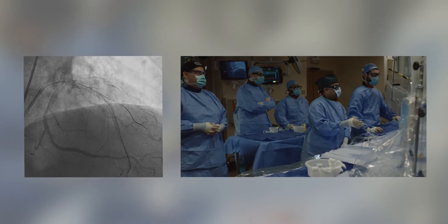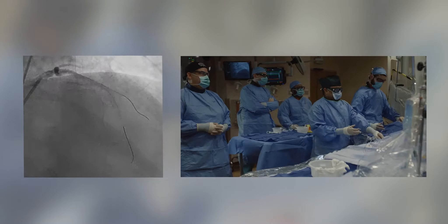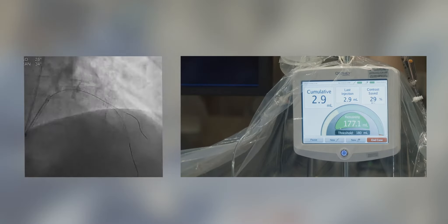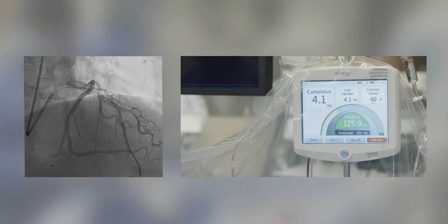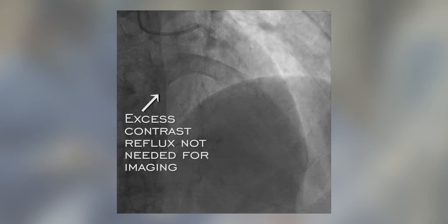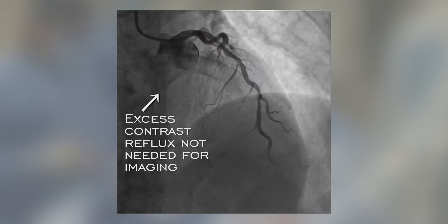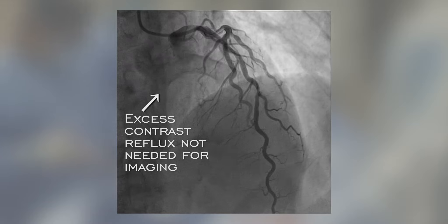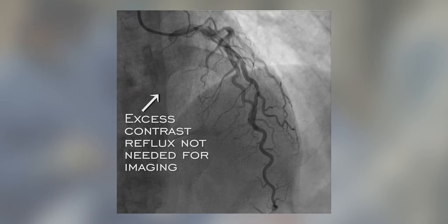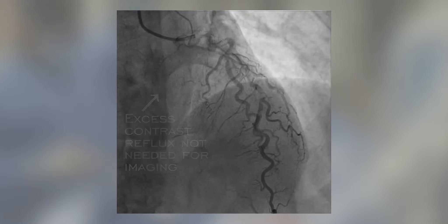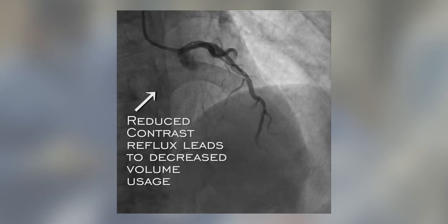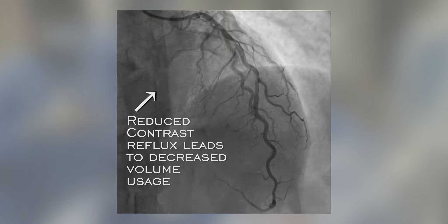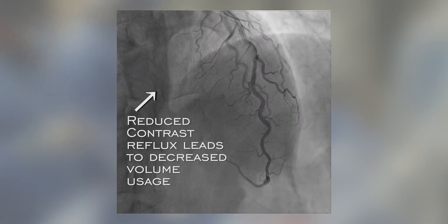The Divert System reduces contrast dye dosage injected into the patient by 40% on average without compromising fluoroscopic image quality. During a typical injection into the coronary arteries of the heart, excess contrast is refluxed into the aorta. Excessive reflux is not needed for imaging, and Divert reduces contrast reflux, resulting in decreased contrast volume usage without compromising image quality.